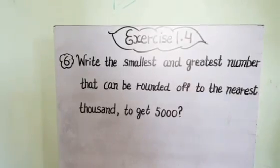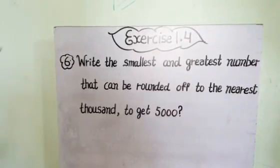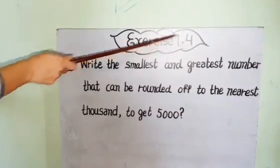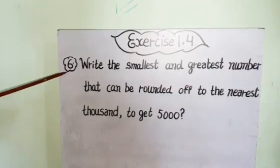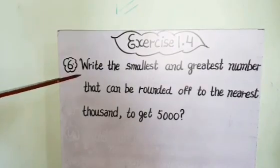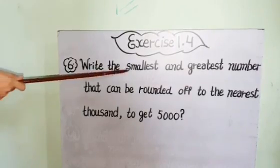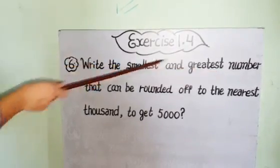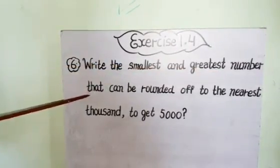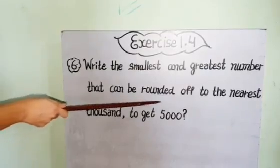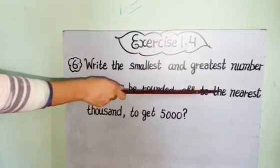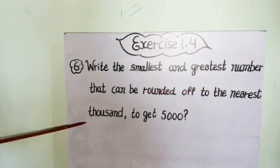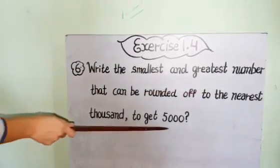Hello kids, today we do exercise 1.4, 6th sum. Write the smallest and the greatest number that can be rounded off to the nearest thousand to get 5000.